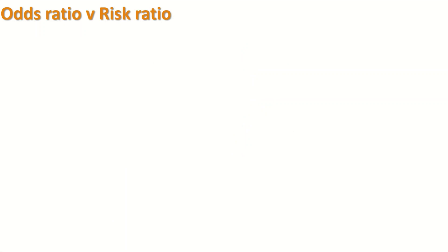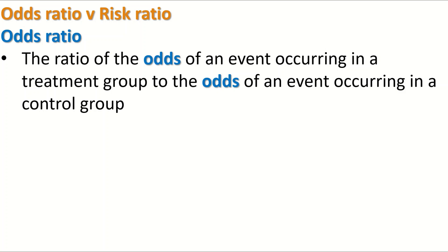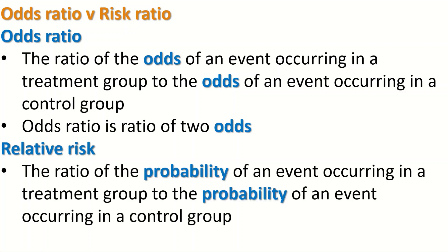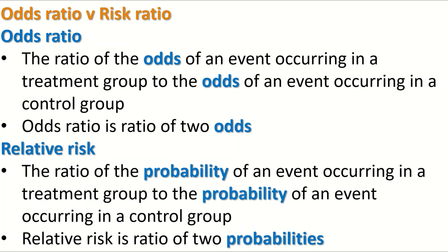What is the difference between odds ratio and risk ratio? The odds ratio is the ratio of the odds of an event occurring in the treatment group to the odds of an event occurring in the control group. The relative risk ratio is the ratio of the probability of an event occurring in the treatment group to the probability of an event occurring in the control group — so it is the ratio of two probabilities.